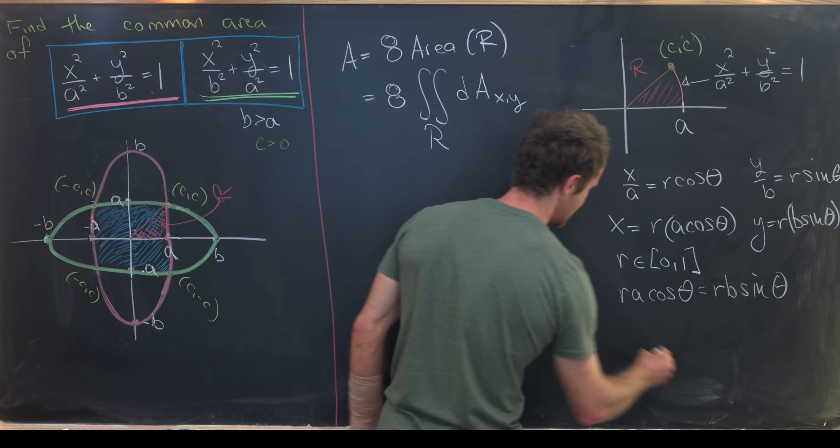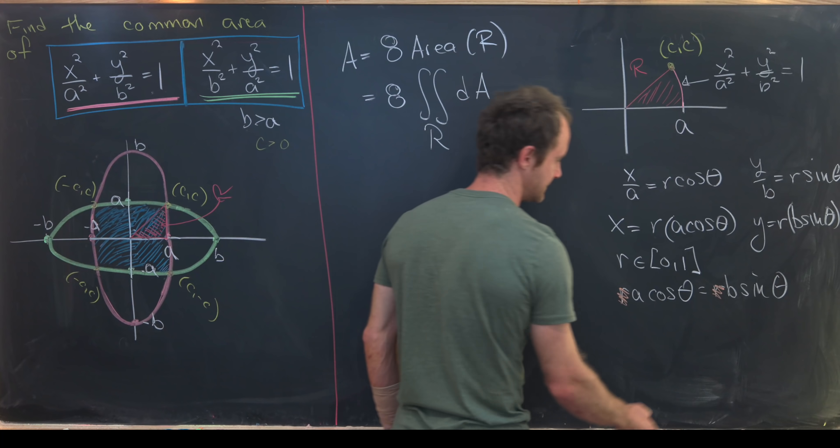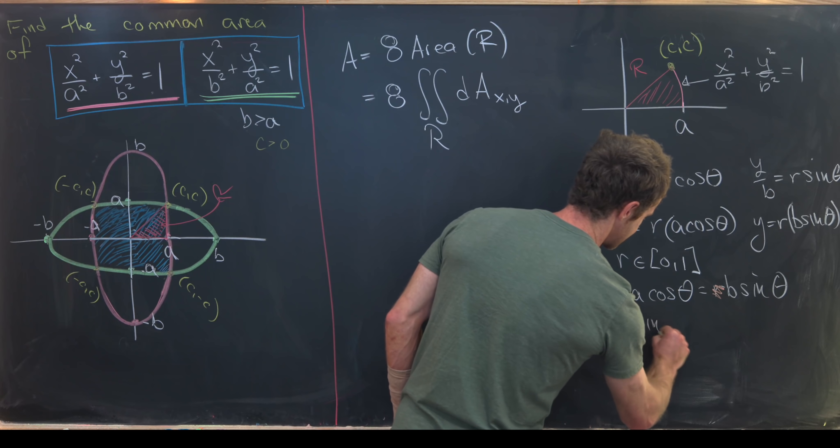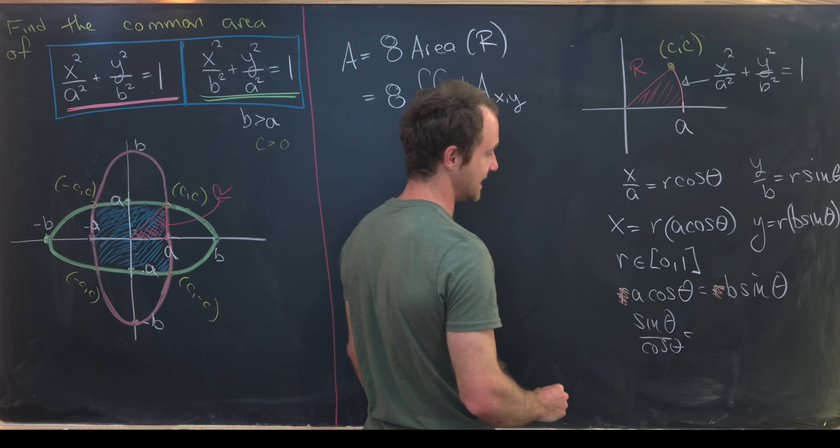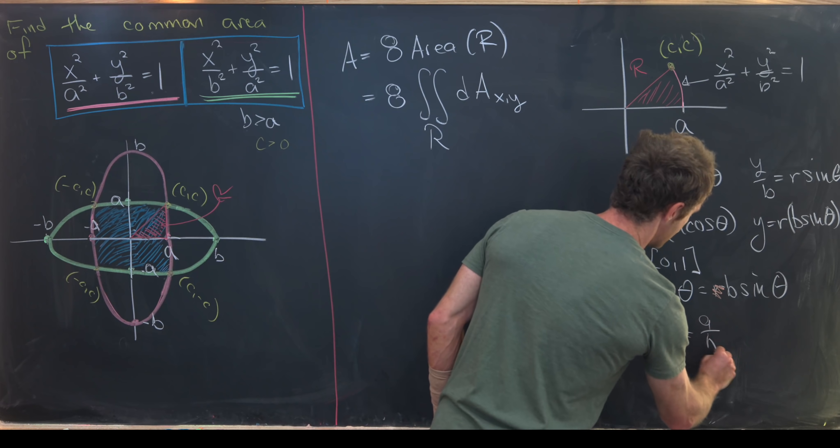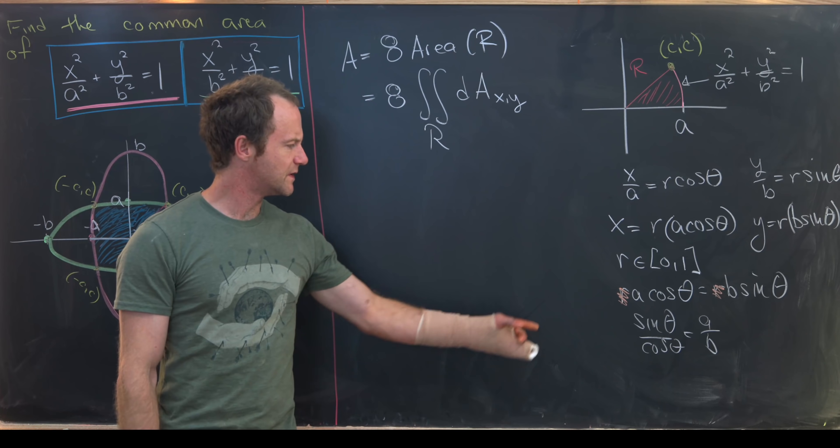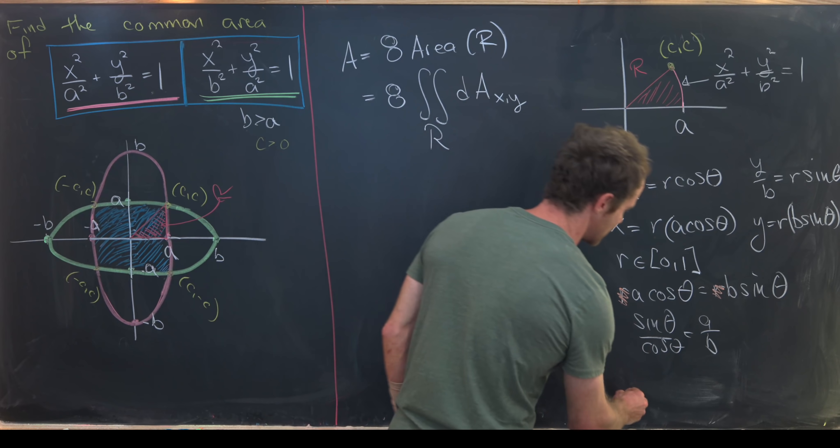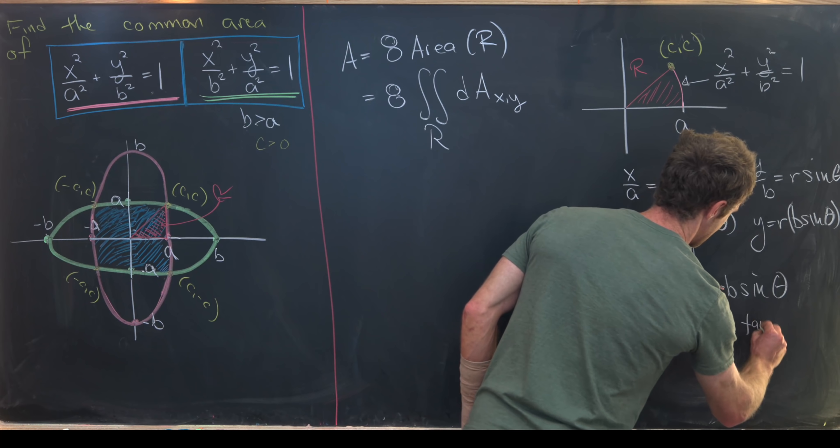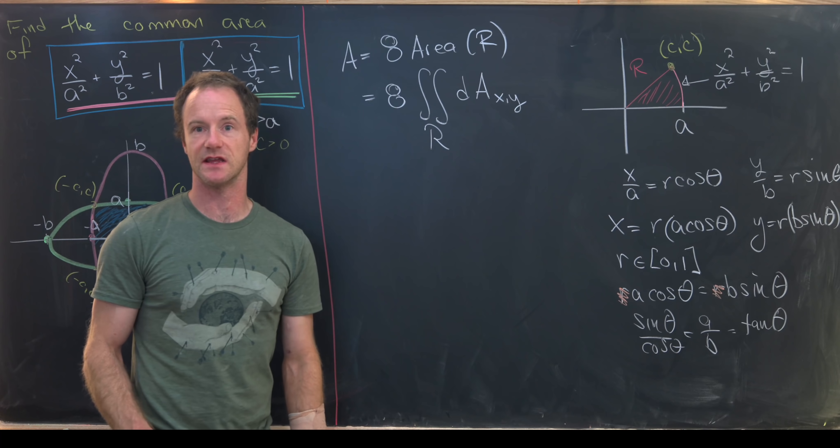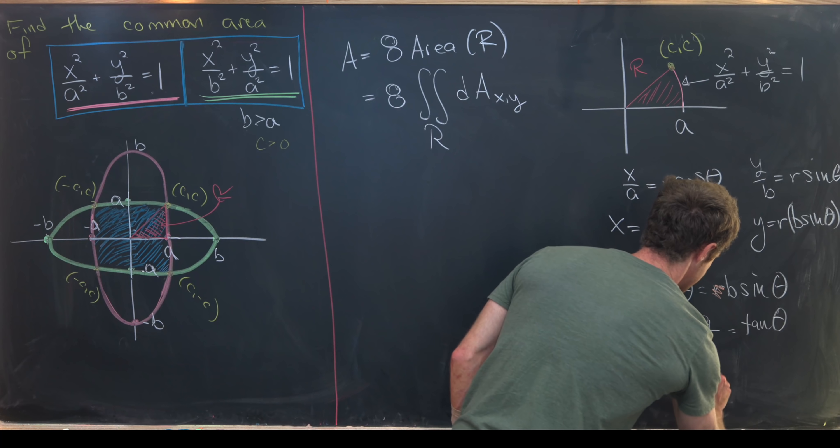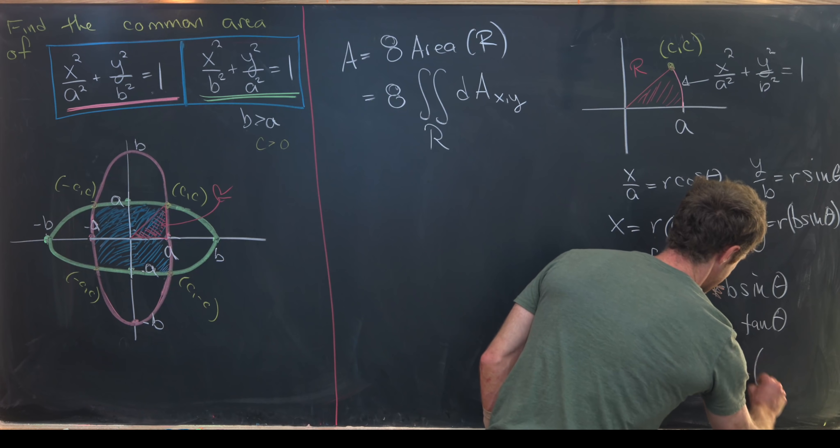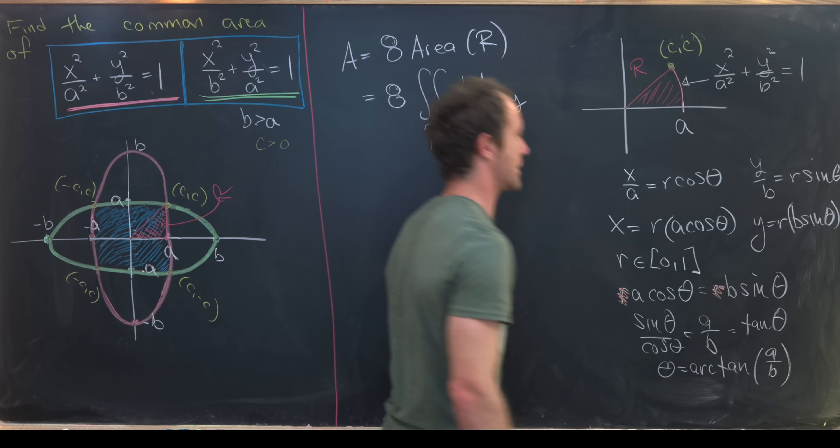The lucky thing is that r will cancel out and we'll be able to solve this. Sine theta over cosine theta is equal to a over b. But sine theta over cosine theta is tangent theta. So that means we have tangent theta equals a over b. In other words, we have theta equals the inverse tangent or the arc tan of a over b.